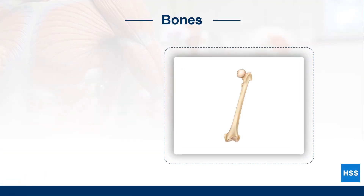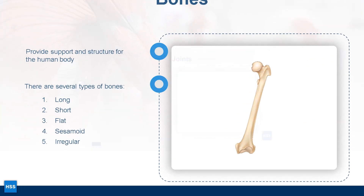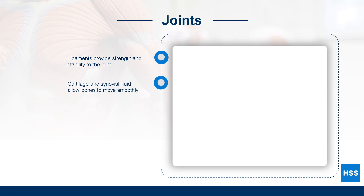Bones are strong, rigid organs that provide support and structure for the body. There are five types of bones found in the human body and each type has important functions and characteristics. The ends of long bones are covered in a smooth padding called cartilage. Joints are where two or more bones come together. Ligaments connect bones to other bones and provide stability to the joints. Cartilage and synovial fluid found between the bones allow the bones to move smoothly at the joints.